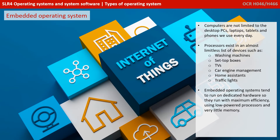Now for embedded operating systems. Computers are not limited to the desktop PCs, laptops, tablets and phones that we use every day. With the Internet of Things becoming more and more important, processors are starting to exist in almost limitless devices such as washing machines, set-top boxes, TVs, car engine management systems, home assistants, traffic lights and much more. Embedded operating systems tend to run on very dedicated hardware, so they run with maximum efficiency. They use very low powered processors and use little memory, and are highly specialised for the particular task they're designed for.